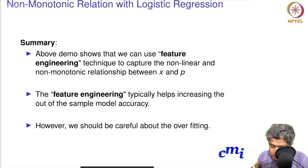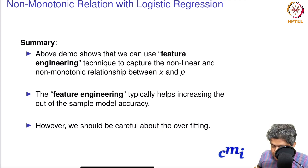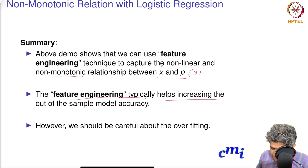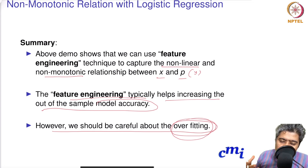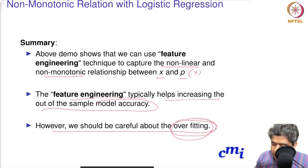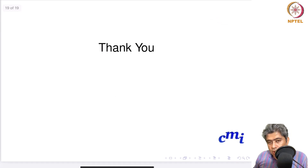We have shown that we can use feature engineering techniques to capture the non-linear and non-monotonic relationship between x and p or y. Feature engineering typically helps increase out-of-sample model accuracy. However, we should be careful about overfitting, because when you put more and more features into your model you increase the chance of overfitting. Thank you very much — see you in the next video.